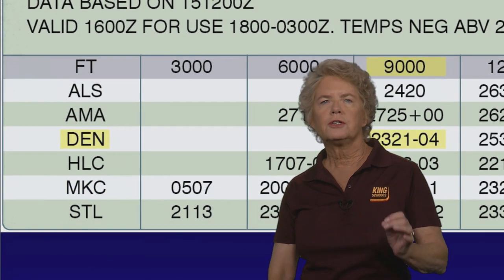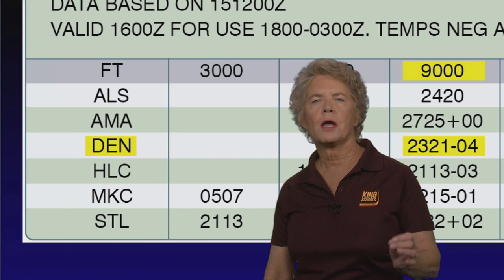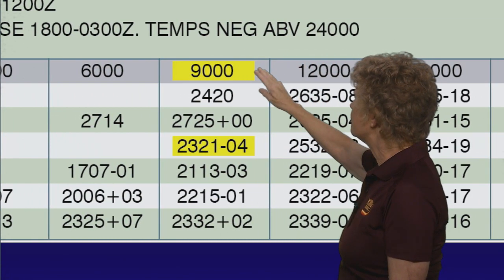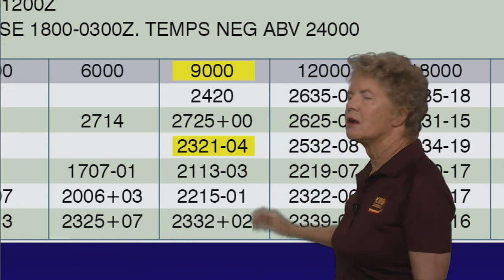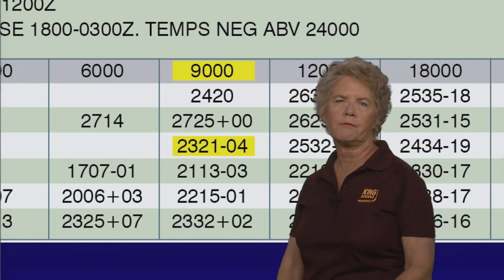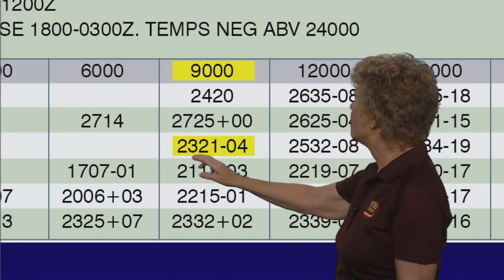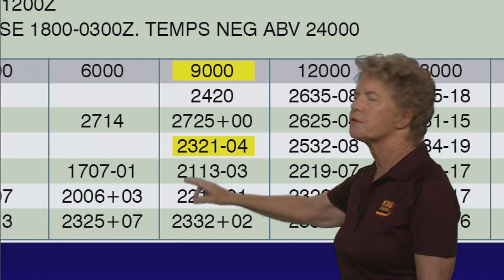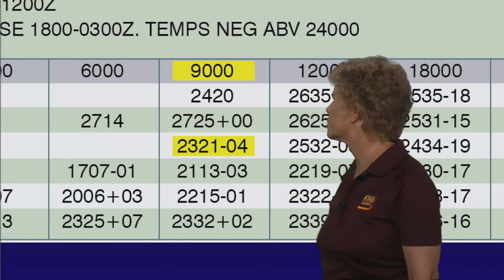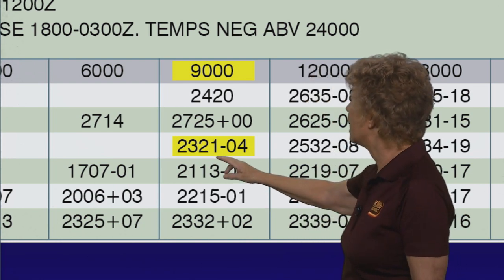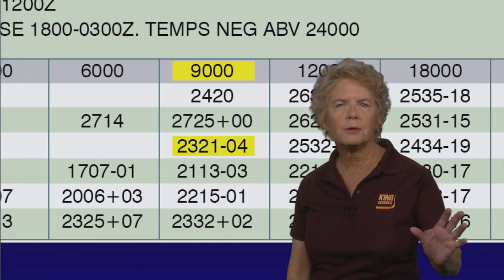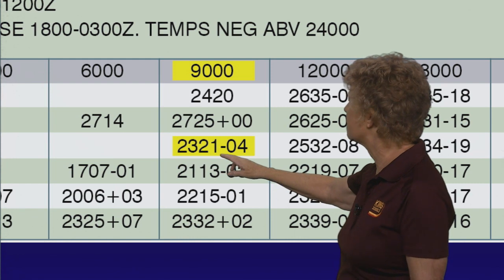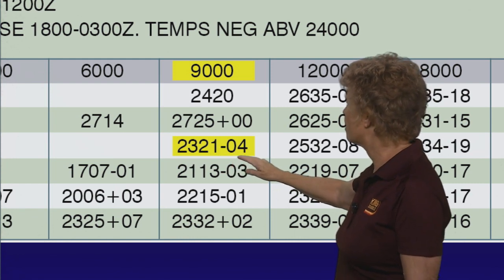Take a look just a little bit up from there at Denver, DEN, and come across to the right to the 9,000 foot level and look at the winds and temperatures aloft forecast for Denver. Here, the wind is forecast to be from 230 degrees true direction, the speed is forecast to be 21 knots, and the temperature is forecast to be minus — not plus — minus 4 degrees Celsius.